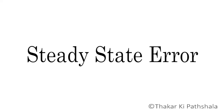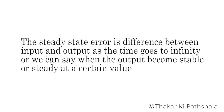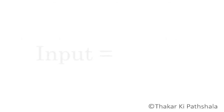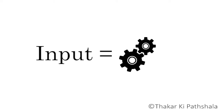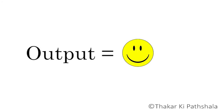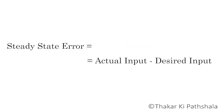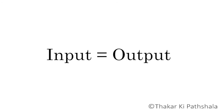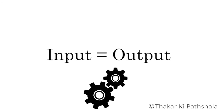Now let's come back to the definition stated earlier: steady state error is the difference between input and output as time goes to infinity, or when the output becomes stable at a certain value. If the output is not desirable, then we should change the input to the system in order to get the desired output. So in other words, steady state error is the difference between the desired input and the actual input, because ultimately the input is what we are getting as output after being processed by the system.